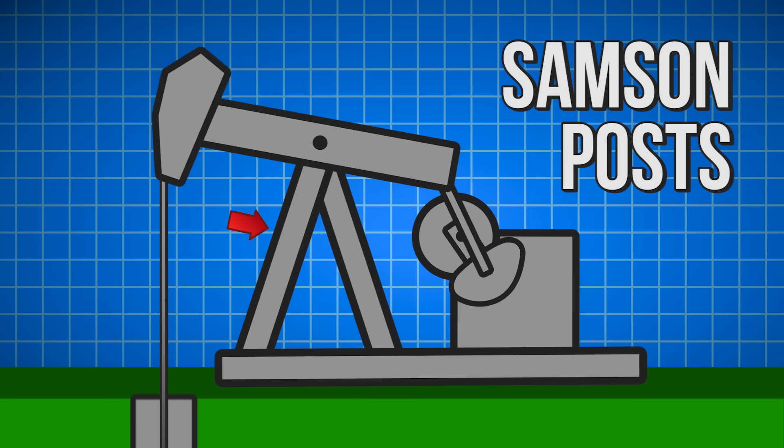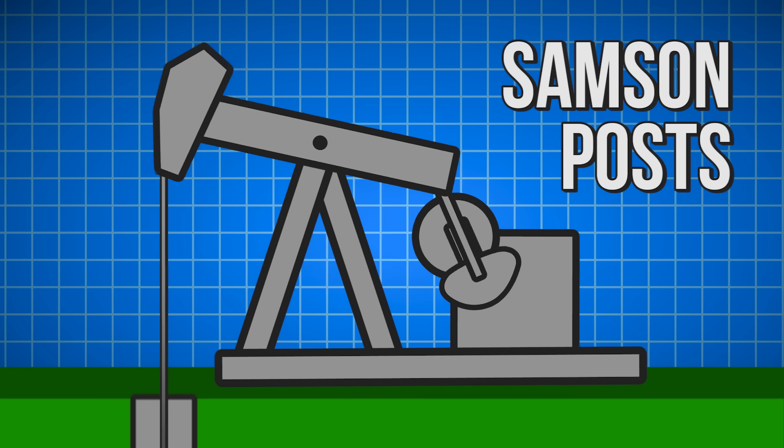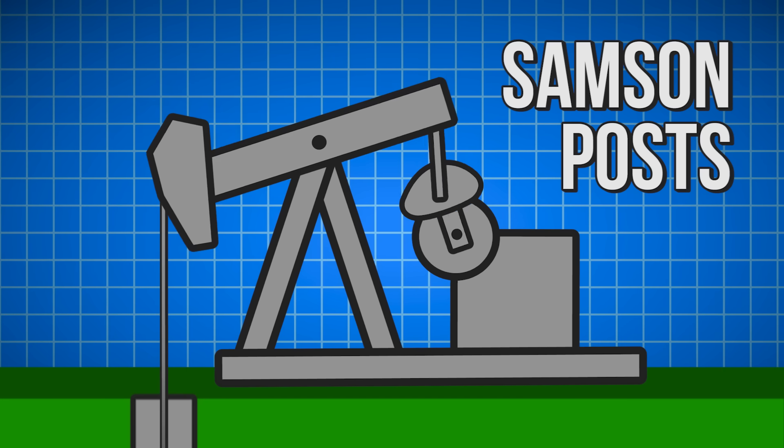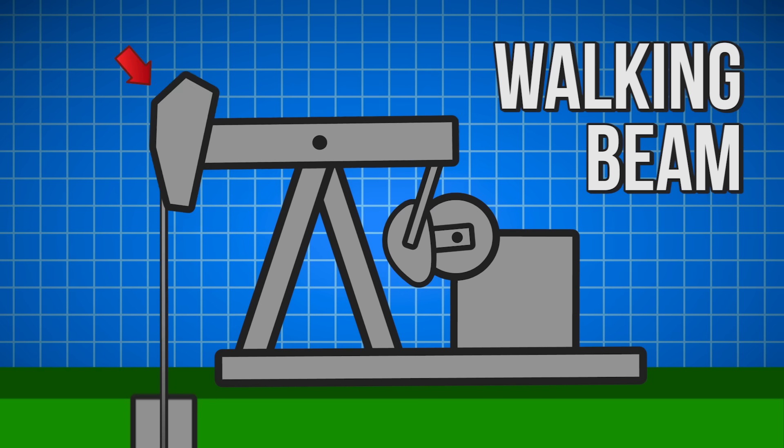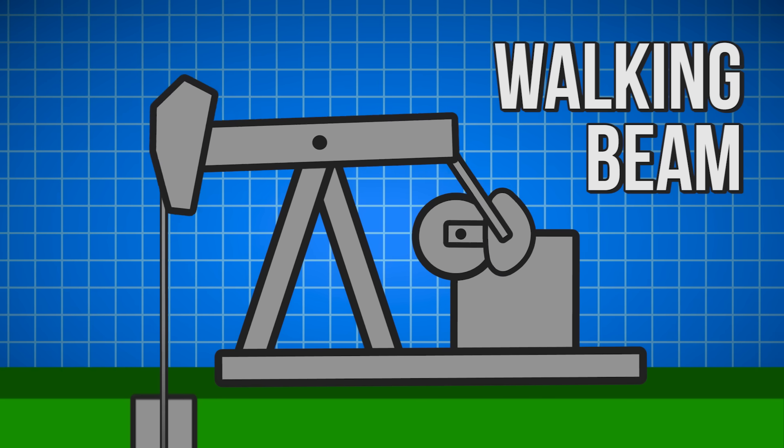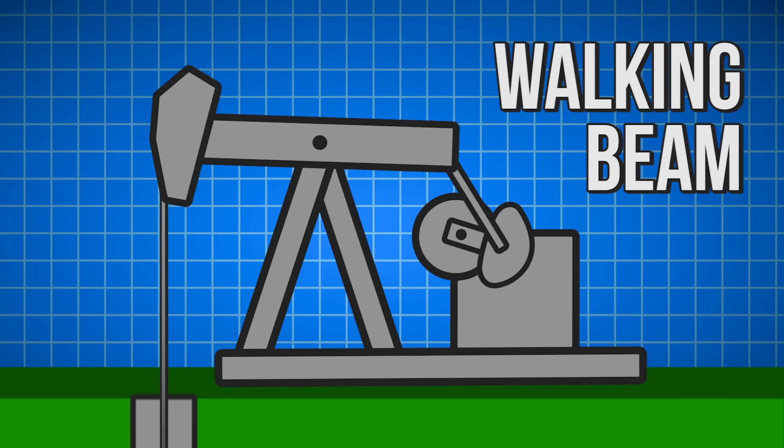The samson posts make up the main A-frame of the structure. They function as the basic support, allowing the pumping mechanisms to work together. Atop the samson post sits the walking beam, attached to a piece called the horse head. These parts together make up the major lever arm responsible for most of the pumping.